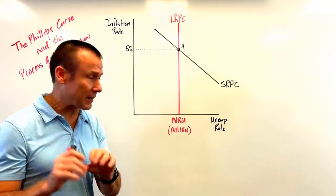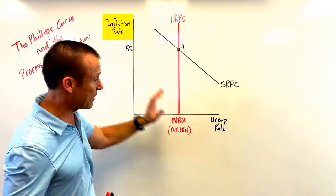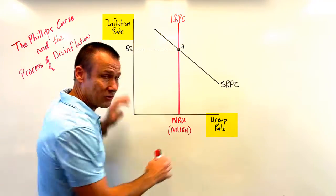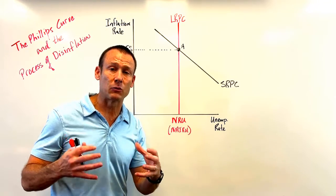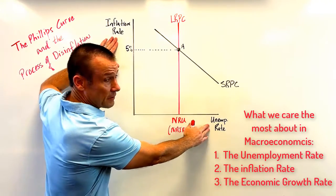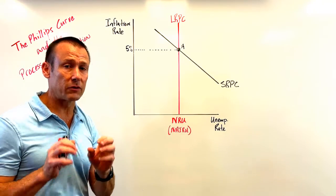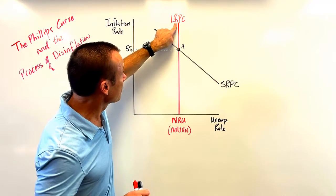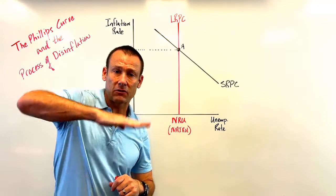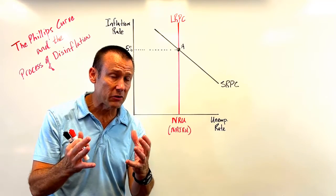The big thing right off the bat: what is the Phillips Curve doing? It's showing the relationship between the inflation rate — something we care a ton about — and the unemployment rate, another major variable in macroeconomics. In the short run, the relationship is inverse. I like to think of it like a seesaw: when one goes up, the other goes down. When the inflation rate goes up, generally the unemployment rate goes down.